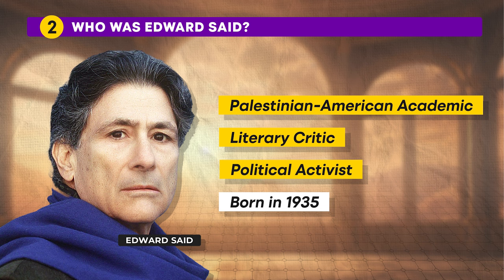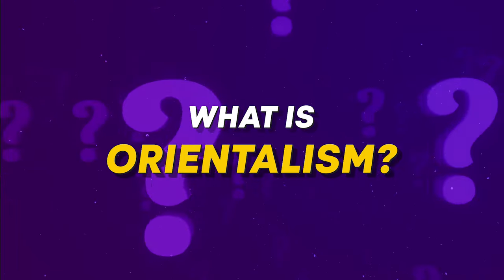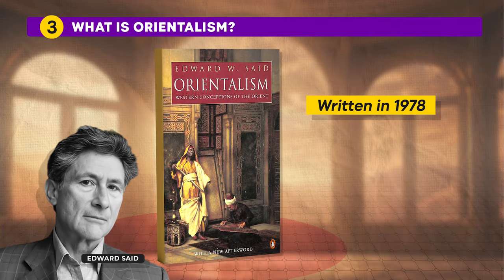Said's ideas emphasized that Western perceptions of the East were shaped by politics and imperialism. Orientalism is a book written by Edward Said in 1978, and as a concept it is a way that people from the West often look at and talk about the East. It is not just about understanding those places — the concept explores how Western countries look down on or simplify the cultures of the East.